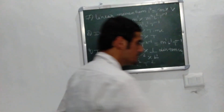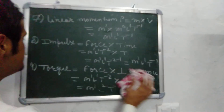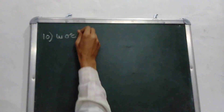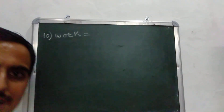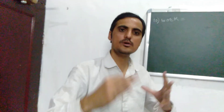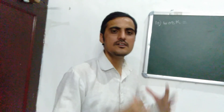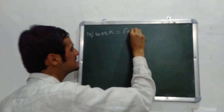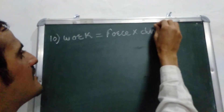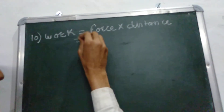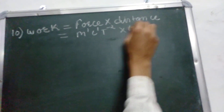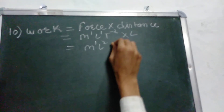Next we discuss the dimensional formula of work. Work is said to be done when the force is applied to a body and the body displaces some distance — that means force multiplied by distance. The dimensional formula of force is M1 L1 T-2, and distance is L, so work comes out to be M1 L2 T-2.